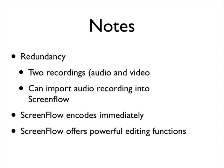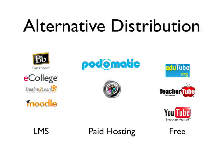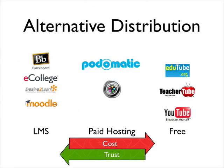One format I use to distribute downloadable files is iTunes U — same as for audio recordings — allowing me to provide either private or public files, for just my students or anyone in the world. To recap why I chose ScreenFlow: built-in redundancy with two recordings (audio and video), instant encoding so I can stop recording during breaks, and powerful editing functions. For distribution, I also use paid hosting like Uyala for streamed content alongside iTunes U.